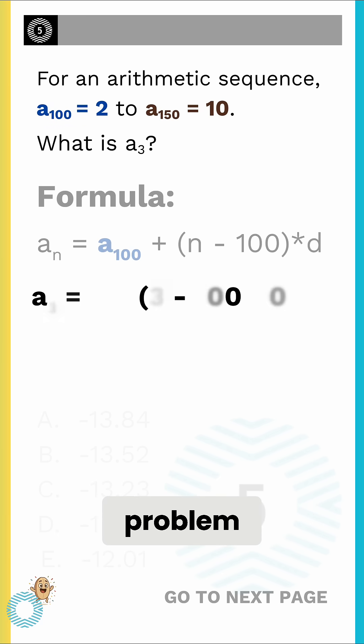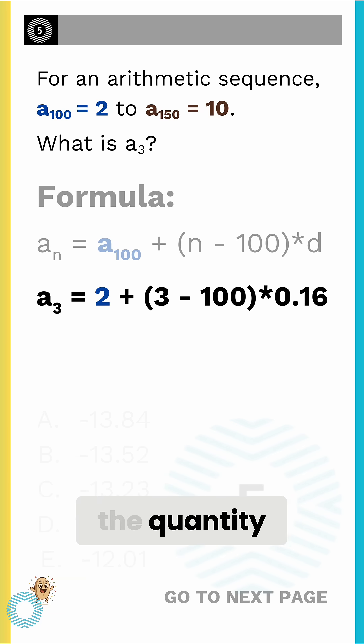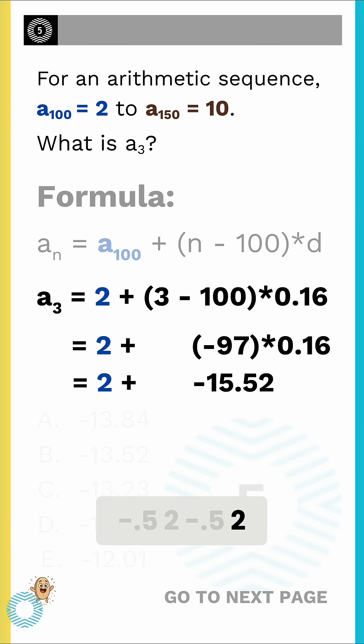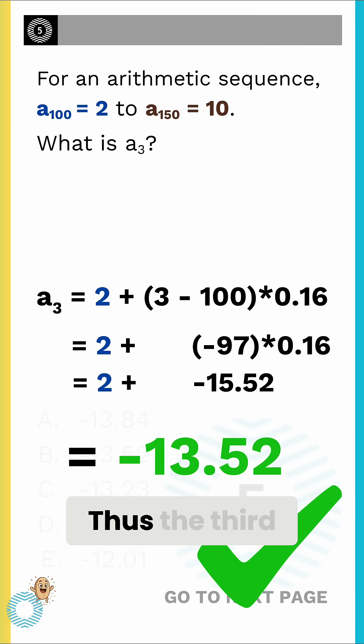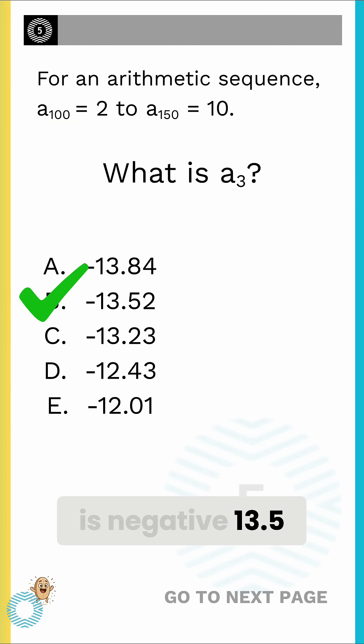Applying this to our original problem, let's use the known 100th term, which is 2. We take 2 plus the quantity 3 minus 100 times the difference, or 2 plus negative 97 times 0.16. That equals 2 minus 15.52, which is negative 13.52. Thus, the third term is negative 13.52.